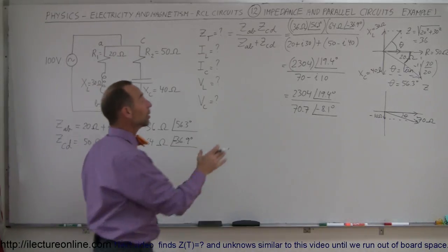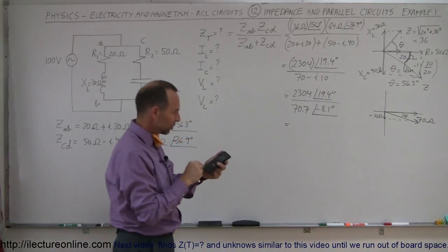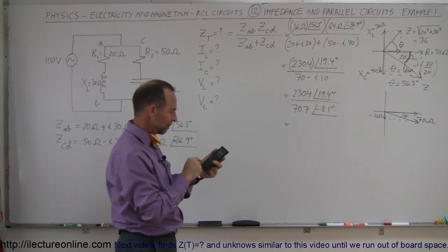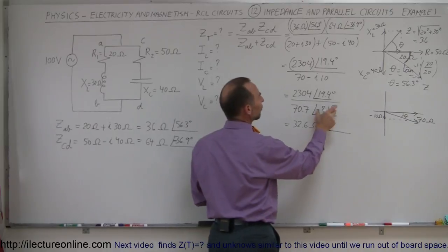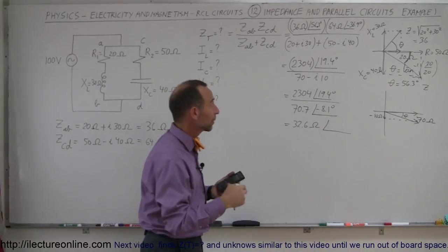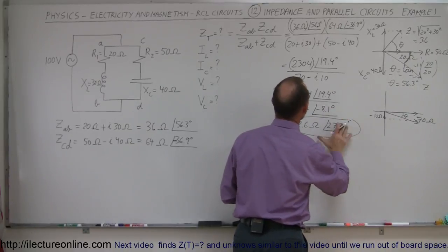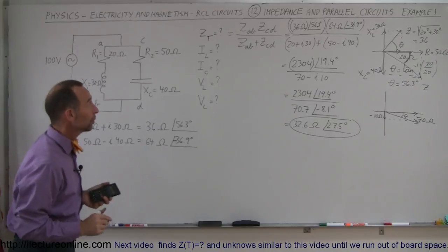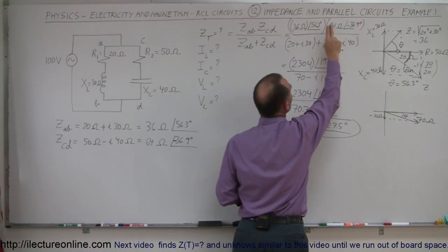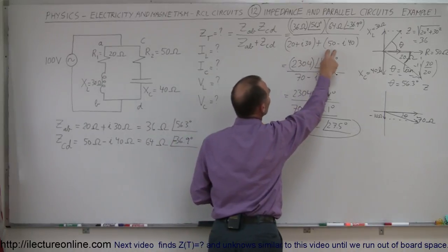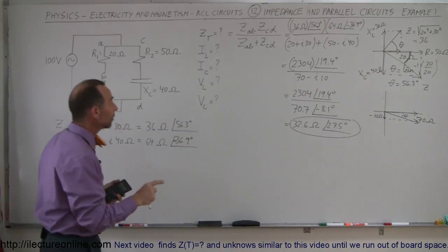Now we divide: 2304 divided by 70.7 gives 32.6 ohms. For the phase angle, we subtract — but since the denominator angle is negative, subtracting a negative makes it positive: 19.4 plus 8.1 equals 27.5 degrees. So the total impedance of the parallel branch is 32.6 ohms at 27.5 degrees.